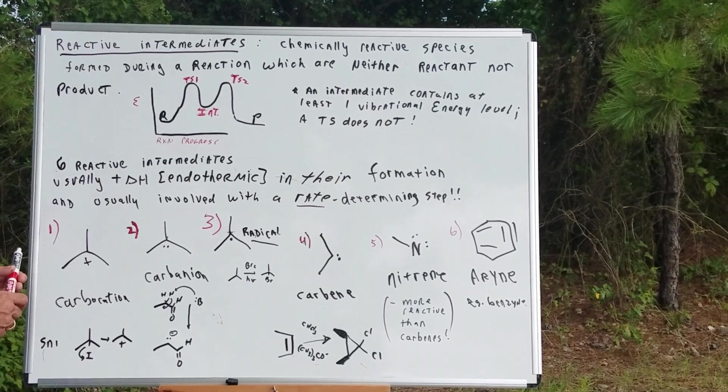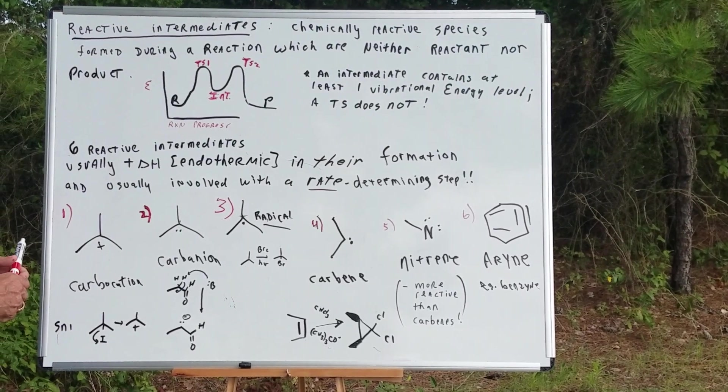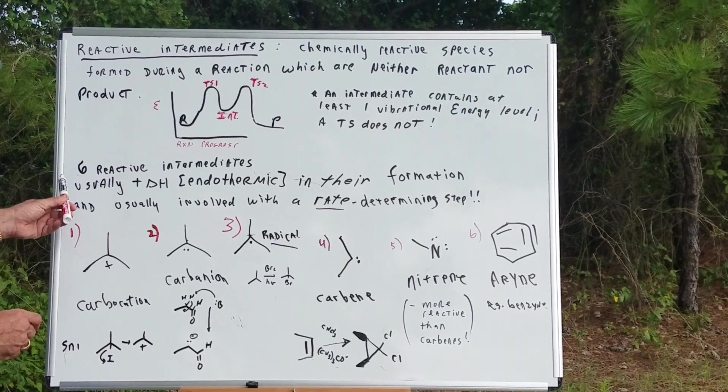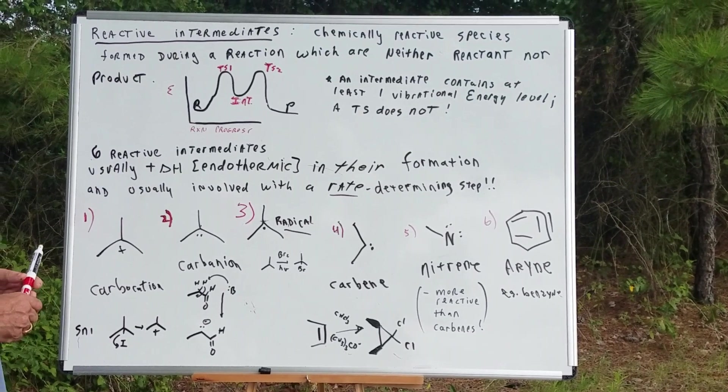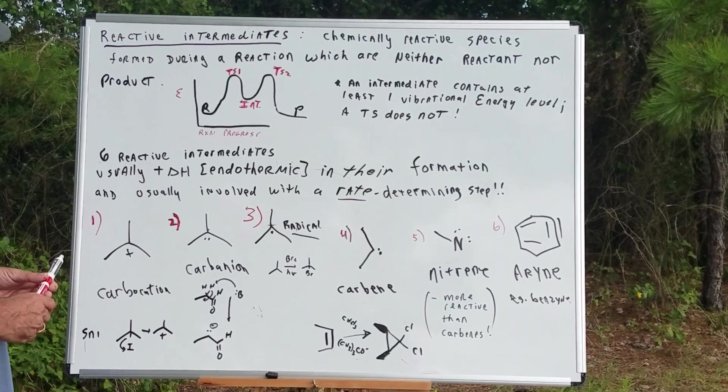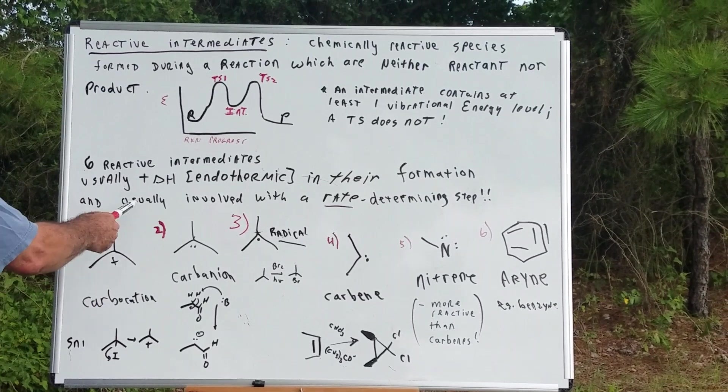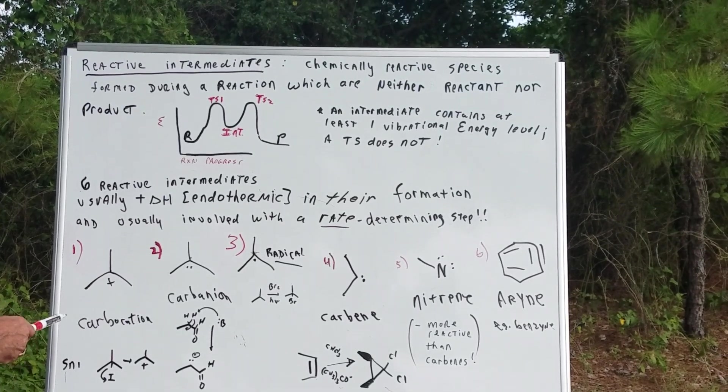There are six reactive intermediates that you need to be able to recognize. Usually, to form one of these intermediates, the process is endothermic. It means you've got to put in energy, and they're usually involved with rate determining steps.